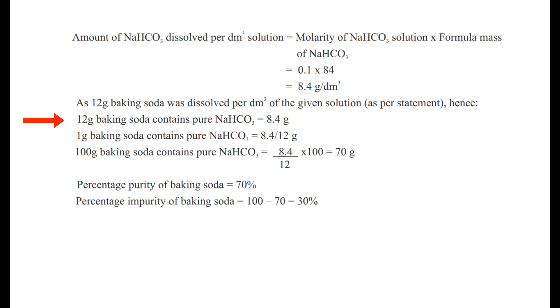In 12 grams of baking soda, 8.4 grams is pure sodium bicarbonate. Therefore, in 100 grams baking soda, the amount of pure sodium bicarbonate is (8.4/12) × 100 = 70 grams.